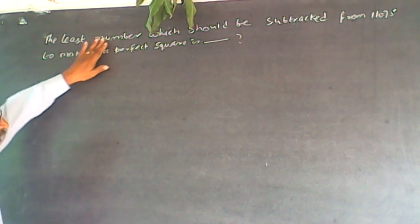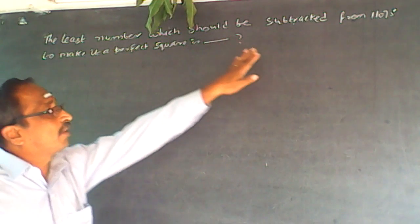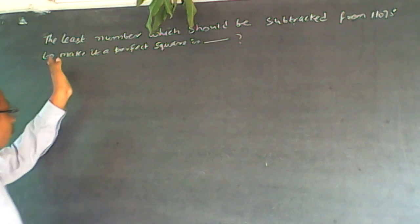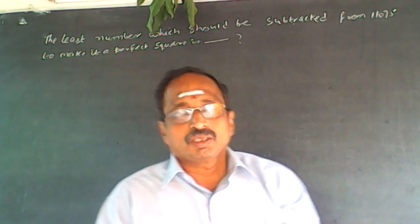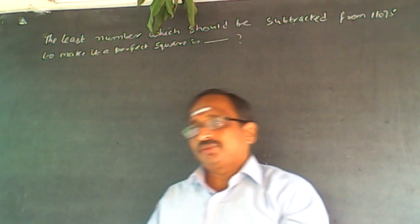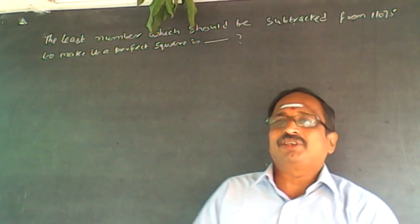The question is: the least number which should be subtracted from 11075 to make it a perfect square. This is a question on properties of numbers again.